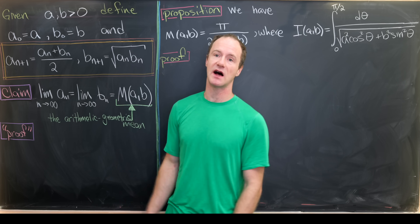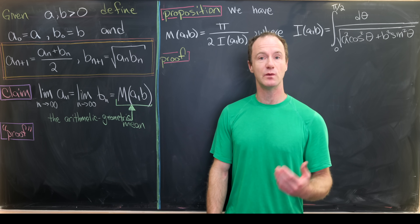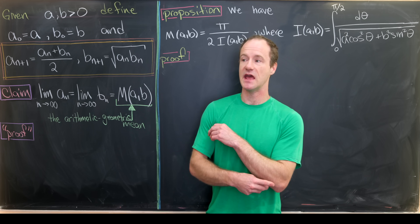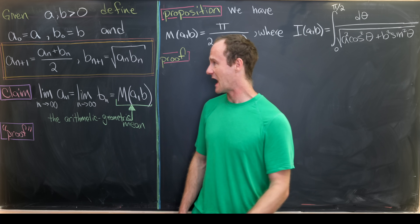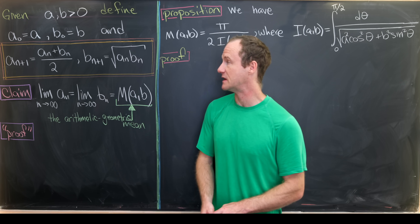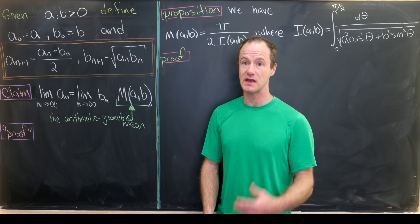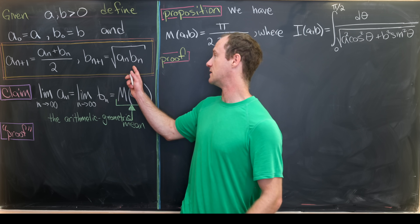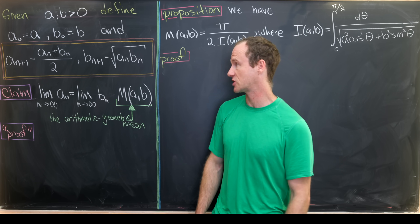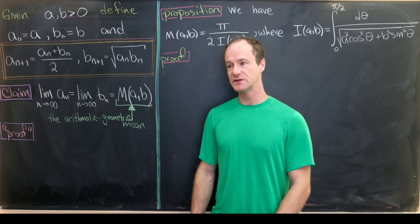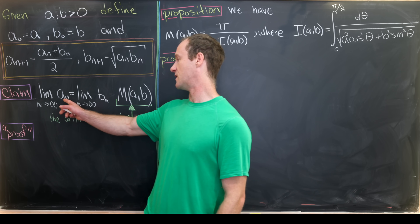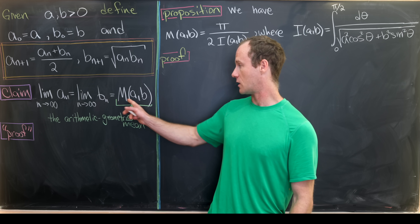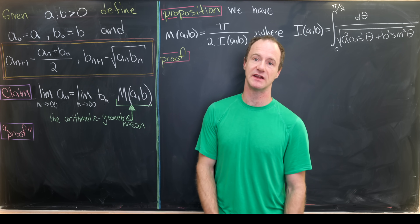Let's say we've got two positive numbers a and b. We define two sequences as follows: a₀ = a and b₀ = b. Then aₙ₊₁ is aₙ plus bₙ over 2 — the arithmetic mean of aₙ and bₙ — and bₙ₊₁ is the square root of the product of aₙ and bₙ, the geometric mean. The first thing we'll prove is that both sequences aₙ and bₙ converge to the same number, which we call M(a,b), the arithmetic-geometric mean.